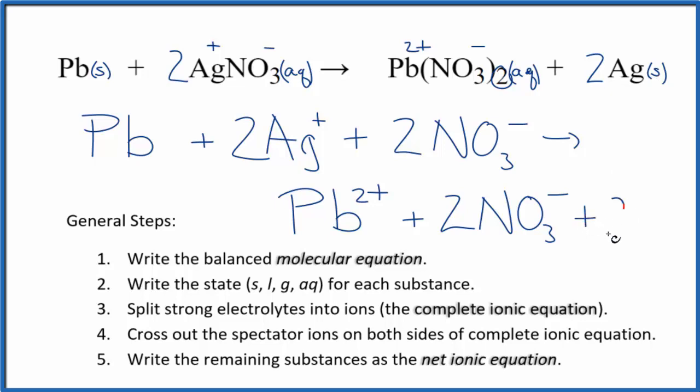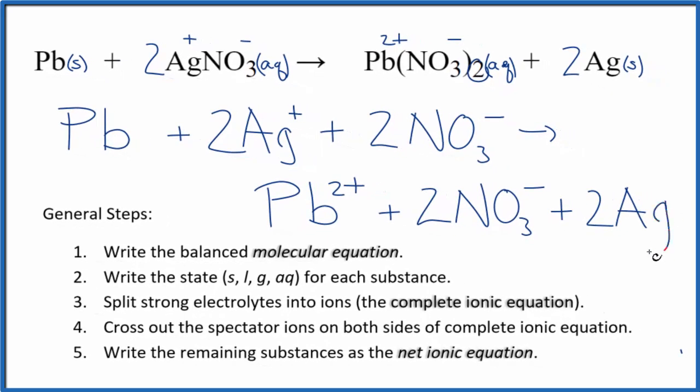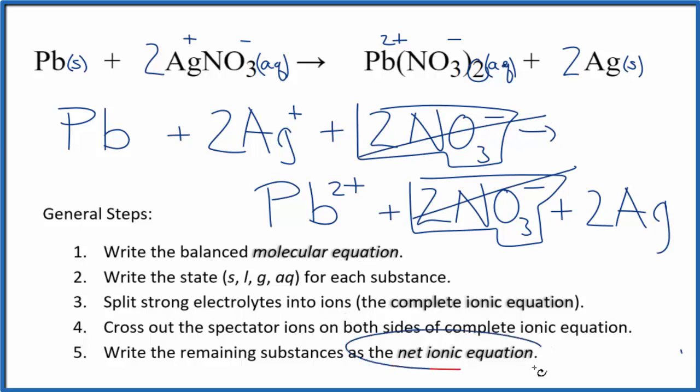Now we're going to cross out spectator ions. They're on both sides. The only thing I see here in the reactants that's the same in the products are these two nitrate ions. These are spectator ions, they haven't changed, so we're just going to cross those out. What's left, that is the net ionic equation for Pb plus AgNO3.